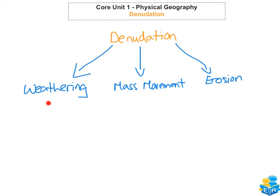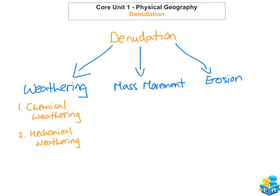So we're going to look at each one of these now — weathering, mass movement, and erosion — and the differences between each. Weathering is the breakdown and decay of rocks that are exposed to the weather. When rocks are broken down and decayed because they're exposed to the elements, we categorize this through two ways: mechanical weathering and chemical weathering. There's also biological weathering as well.